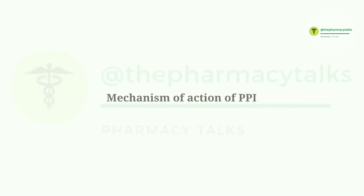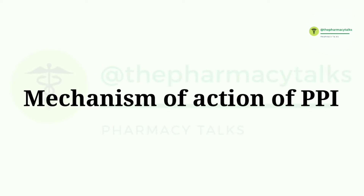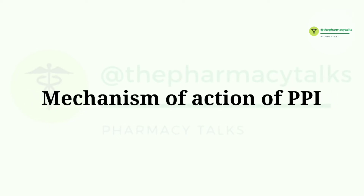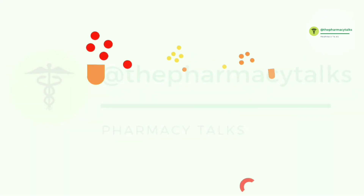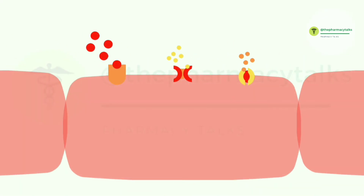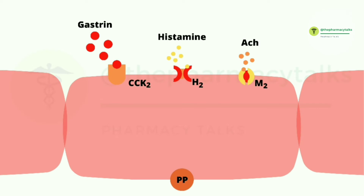Now we'll discuss their mechanism of action in detail. For that we'll first discuss the mechanism of proton pumps in the body. The proton pumps can be stimulated by three receptors: cholecystokinin-2 receptor, histamine-2 receptor, and muscarinic receptor or M receptor. G cells are responsible for the production of gastrin, and when gastrin binds with the cholecystokinin receptor, it will directly stimulate the proton pump.